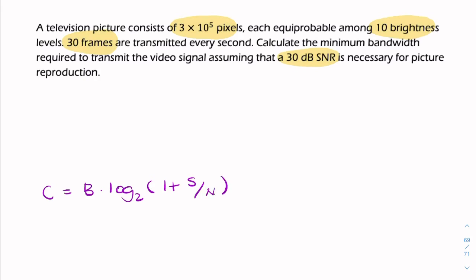So what we're trying to find is B. So let's see what we're given. Let's start with the signal-to-noise ratio. That's the easy one.